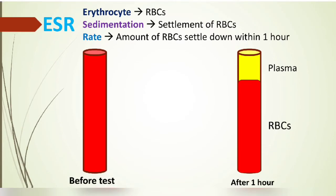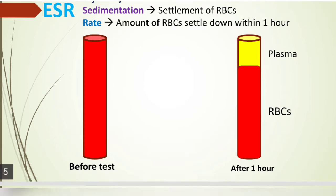ESR stands for erythrocyte sedimentation rate — erythrocyte is the name for RBCs, sedimentation is the settlement of RBCs, and rate is the amount of RBCs settled down within one hour. Before the test the column appears all red; after one hour the yellow plasma separates above and the red RBC settlement is below.